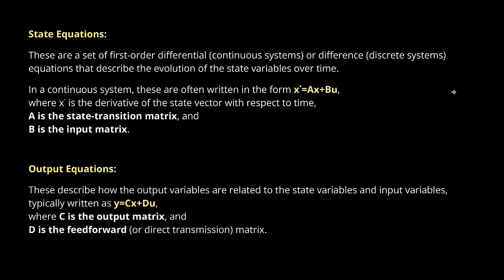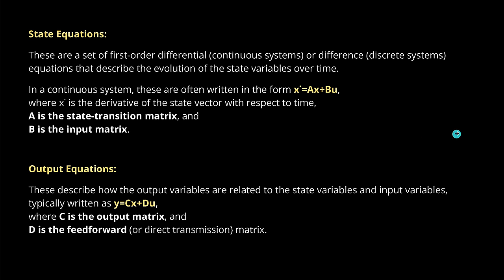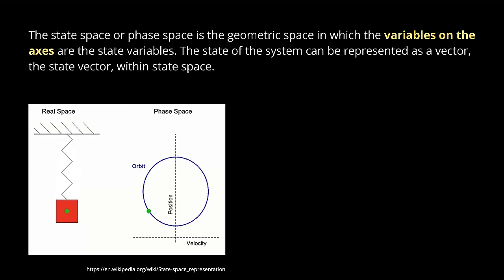The first equation is called the state equation, and the second is called the output equation. A is the state transition matrix, B is the input matrix, C is the output matrix, and D is the feed-forward or direct transmission matrix.